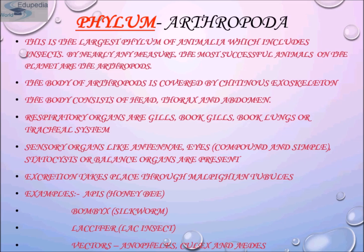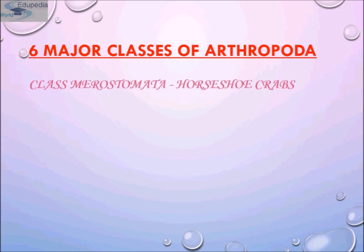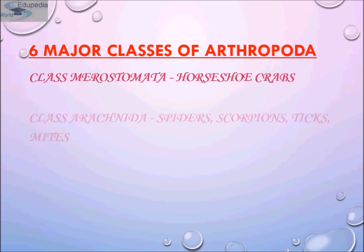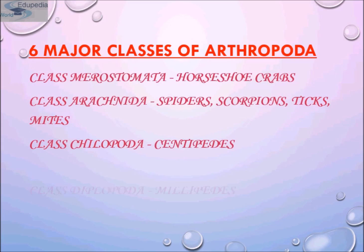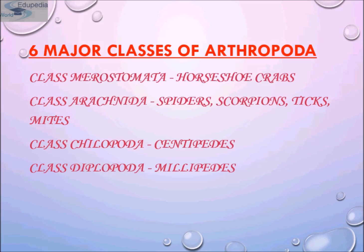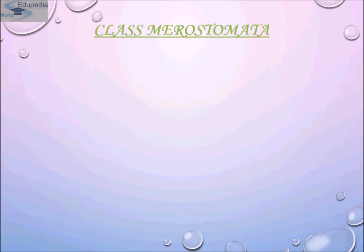There are five classes of arthropods. Class Merostomata includes horseshoe crabs. Class Arachnida includes spiders, scorpions, ticks, and mites. Class Chilopoda includes centipedes. Class Diplopoda includes millipedes. And the last class is Class Insecta, where insects come.